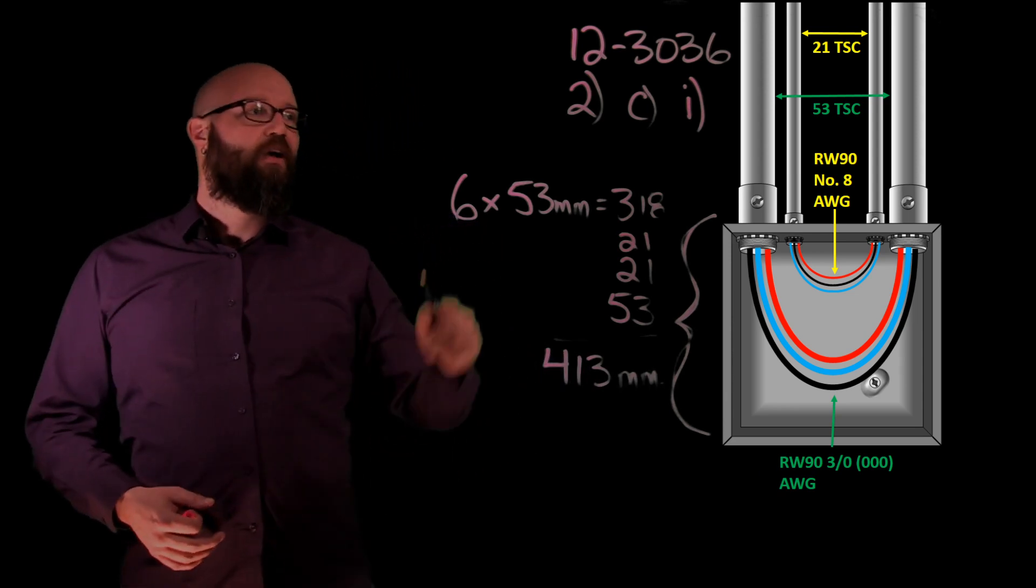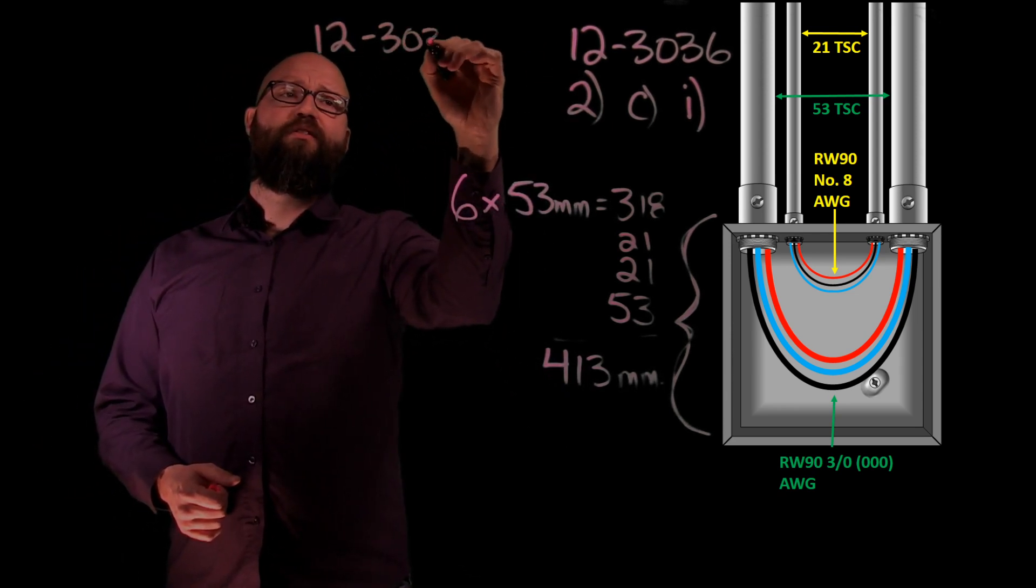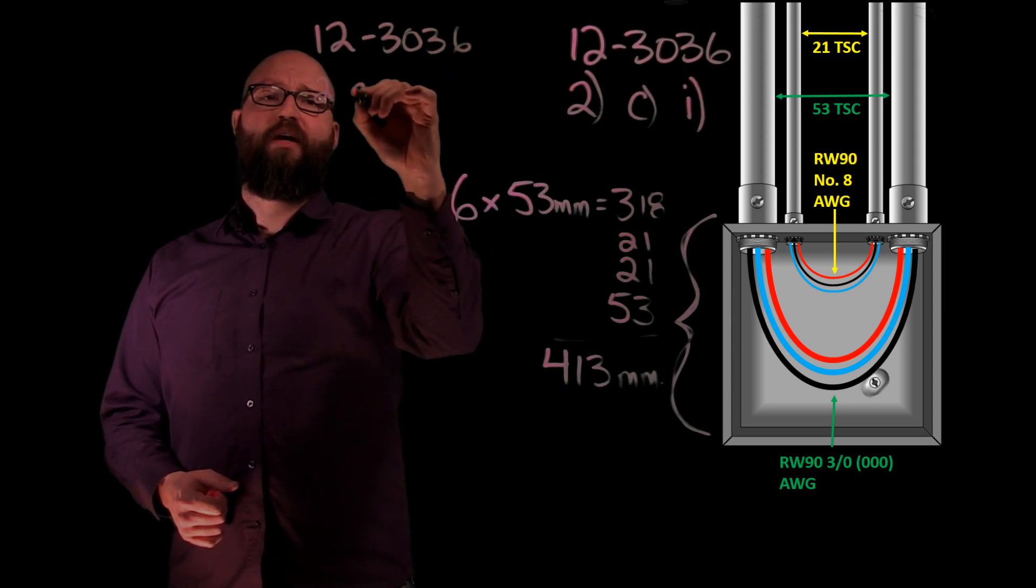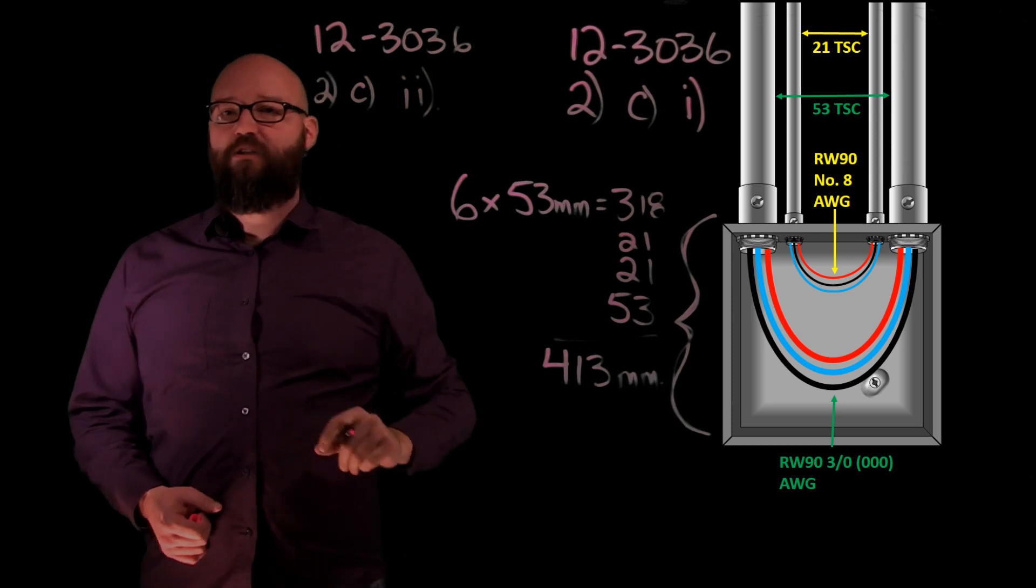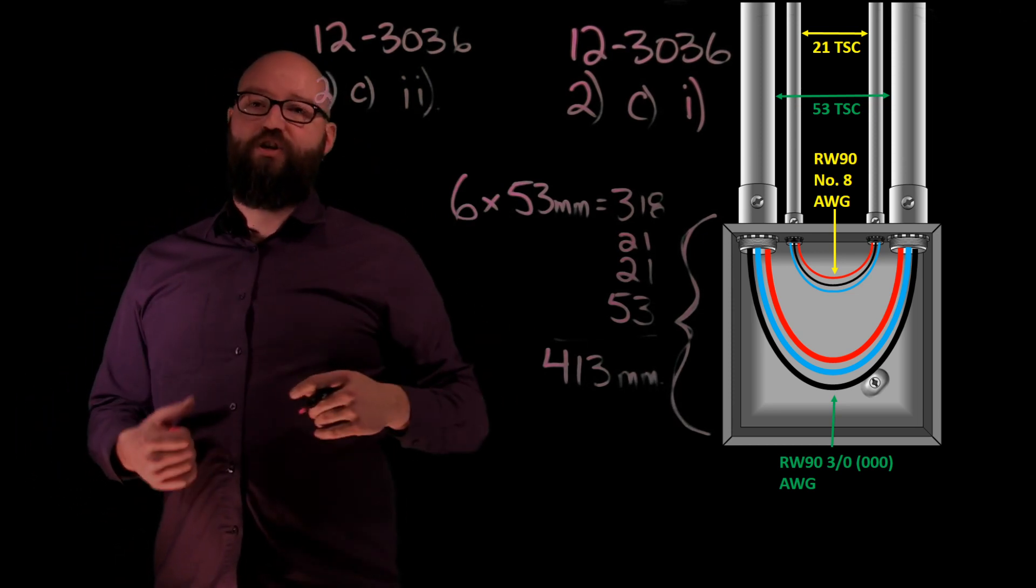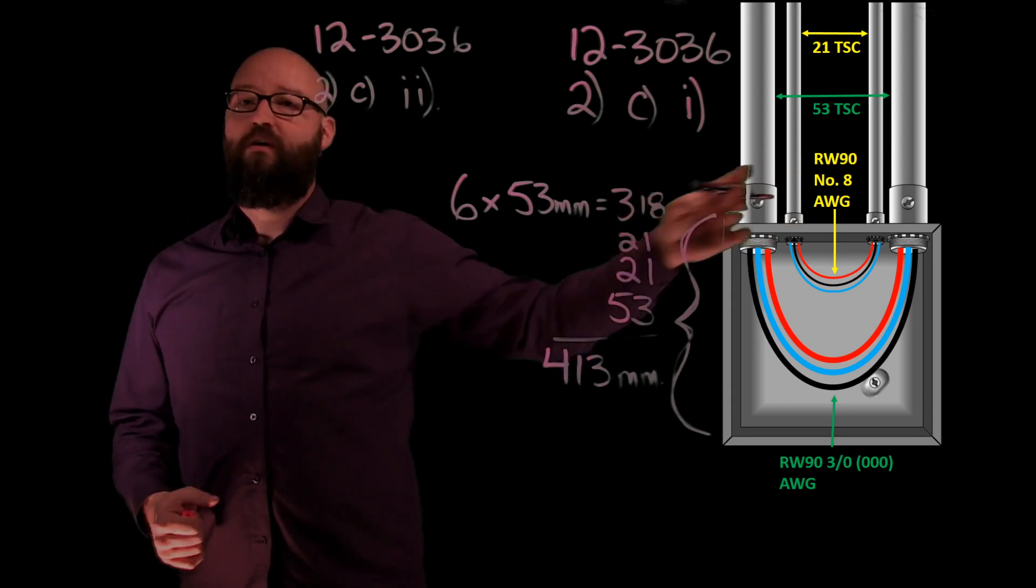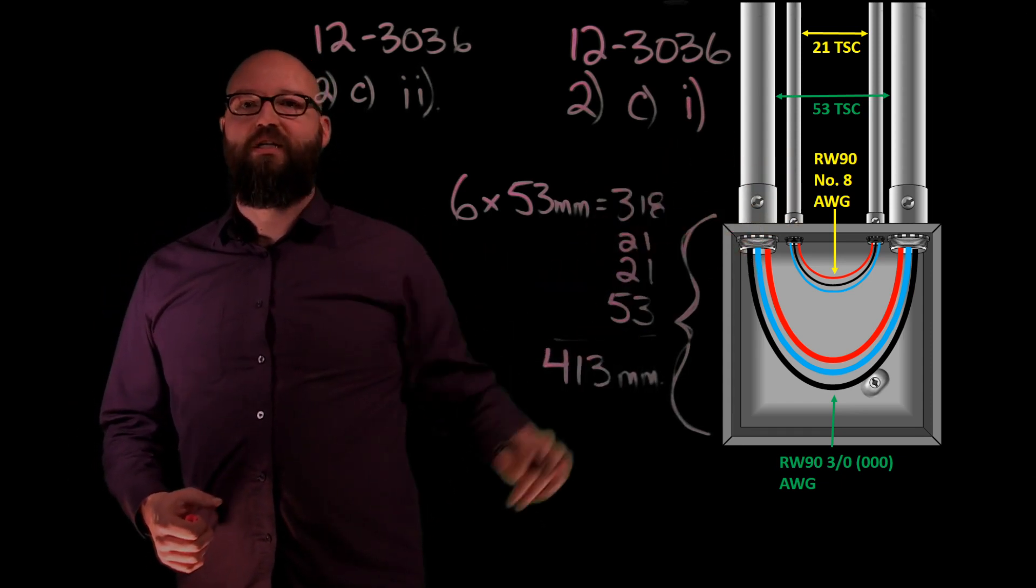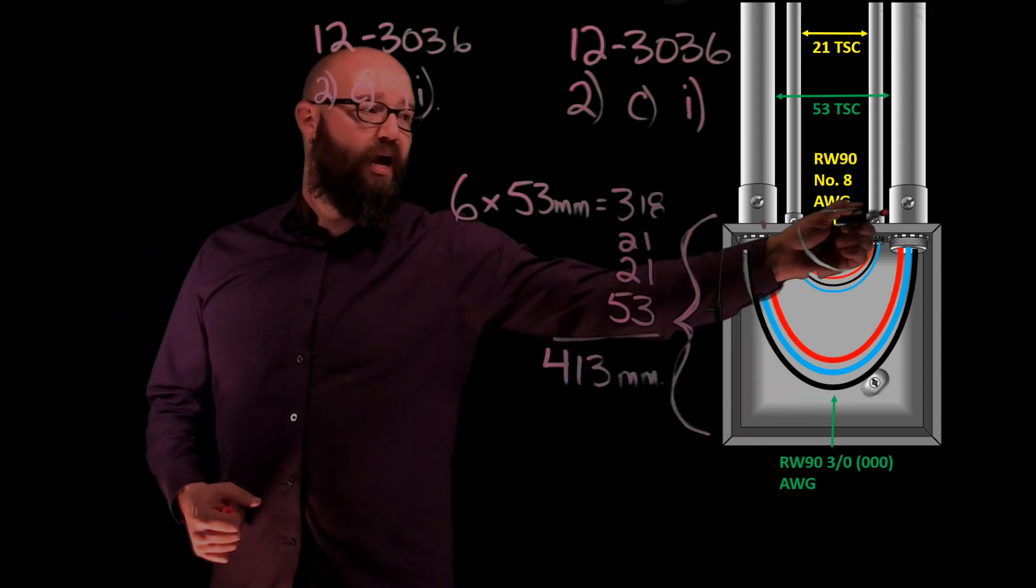So what it tells me if I look at 12-30-36, if I go 12-30-36 sub rule 2 item C but now we're looking in I-I, it tells me that to observe that proper bend radius or to make sure that I have six times the largest trade size conduit of the conduits that contain those conductors. Right, so our three oughts start here and end here.